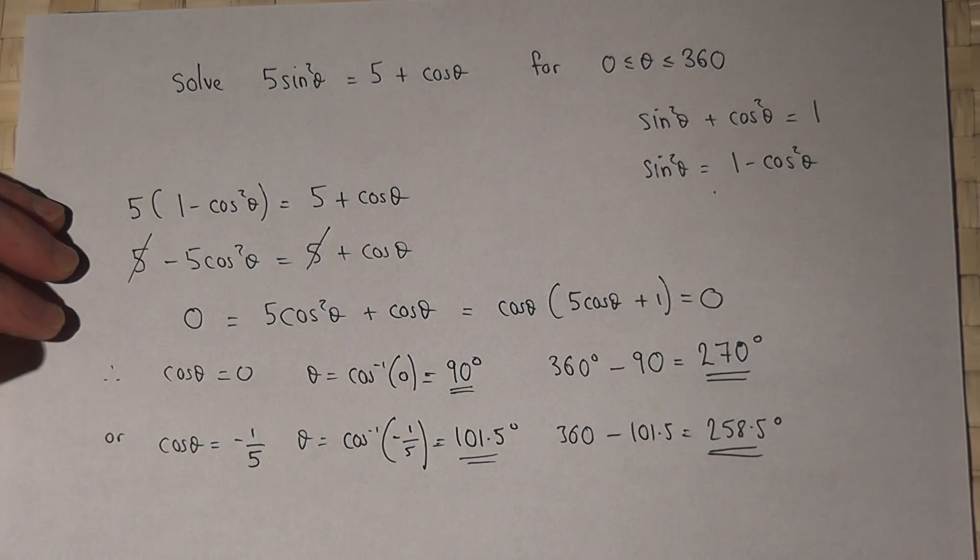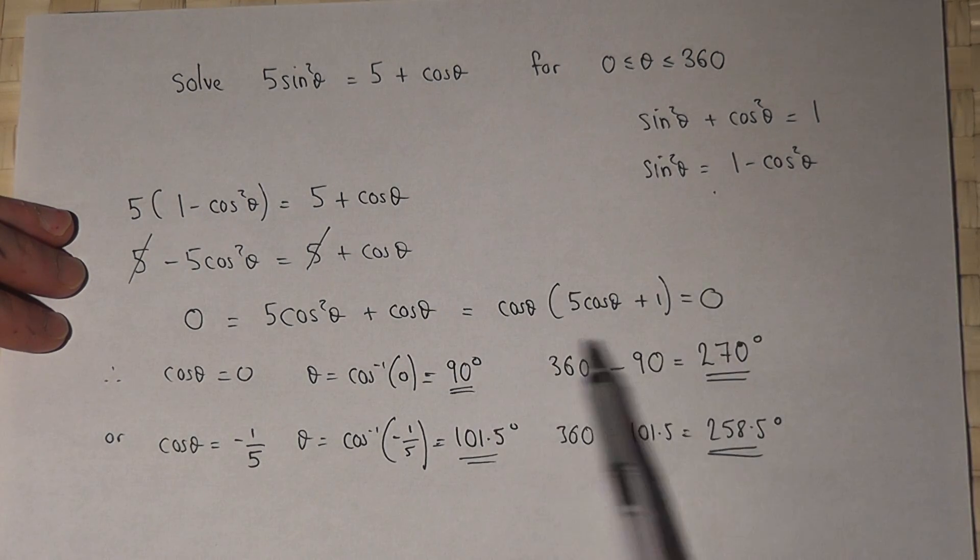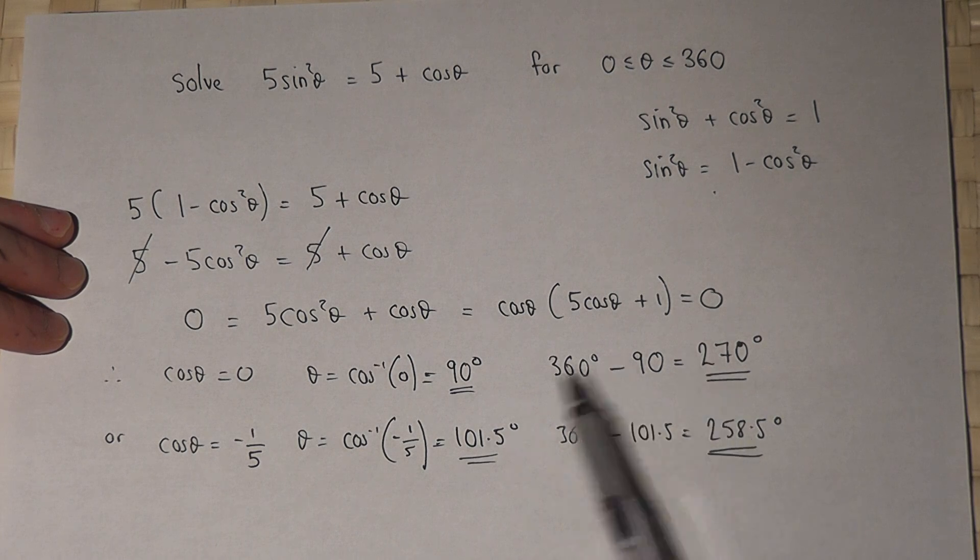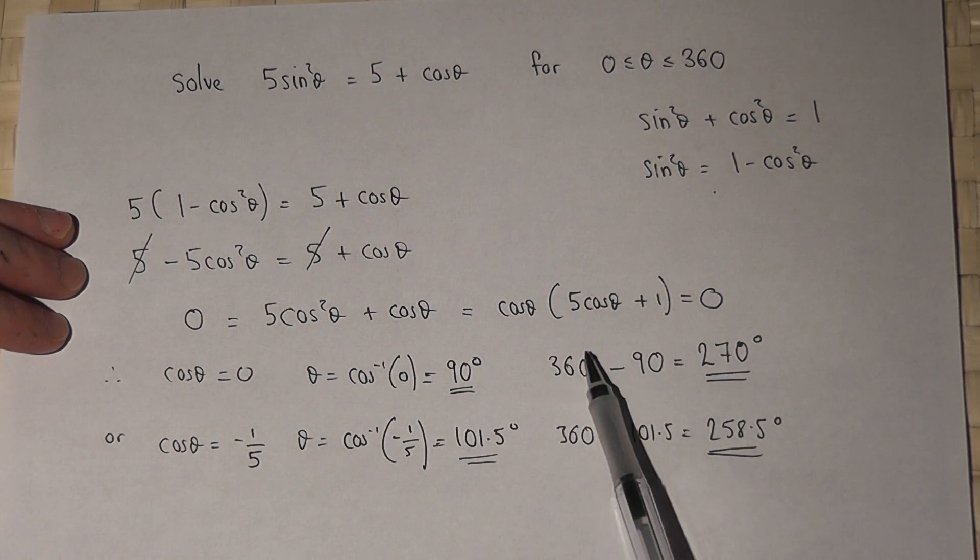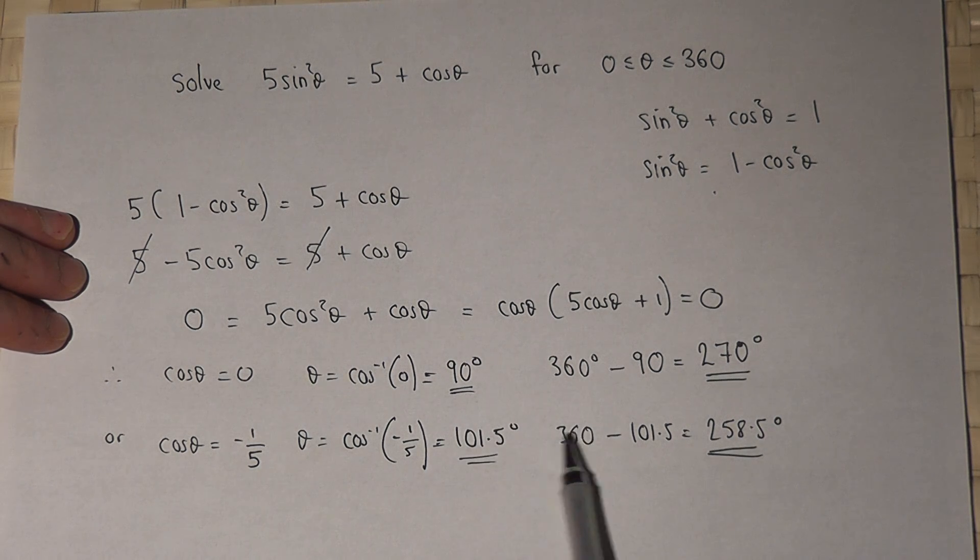So with cosine, between 0 and 360, there are actually two values you can find, and it's always 360 minus the first value. And they are the four solutions.